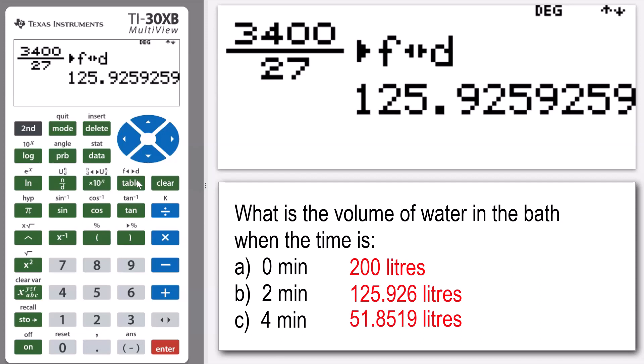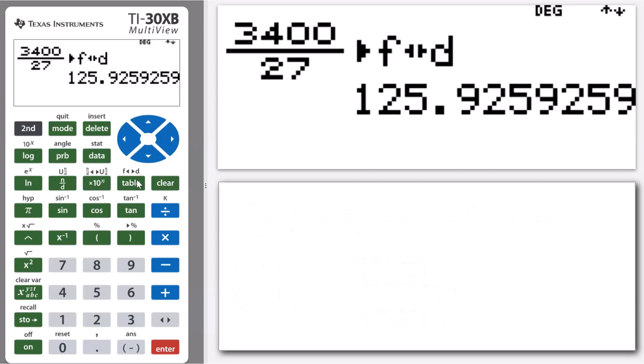Okay, a little bit of an extension on this question. You might be asked to find at what time does the bath completely empty with water, so at what time does that volume get down to zero. Now this would probably usually involve some algebraic working that you might be expected to do, but you can use your calculator to help you confirm your answer or get an idea where the answer might be.